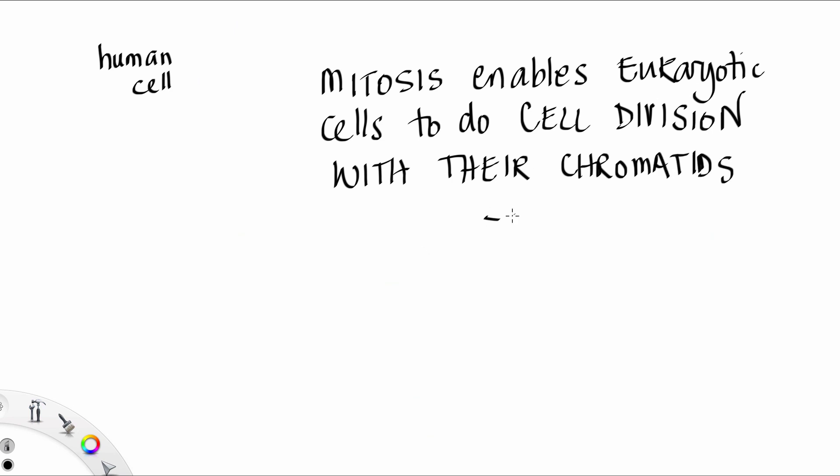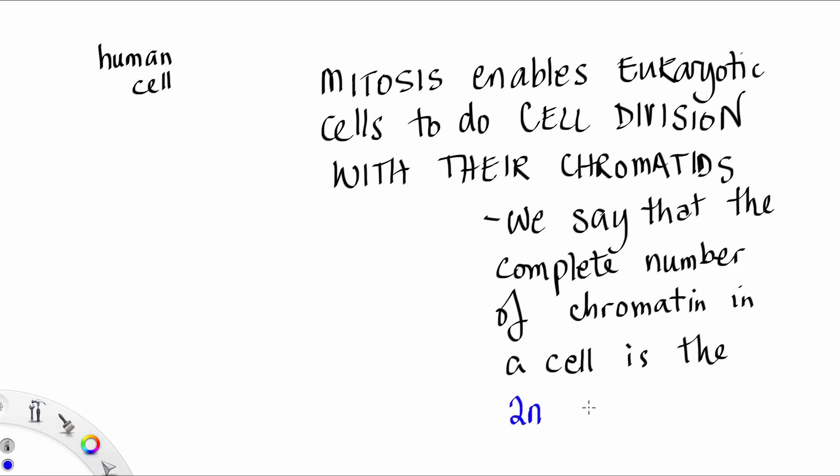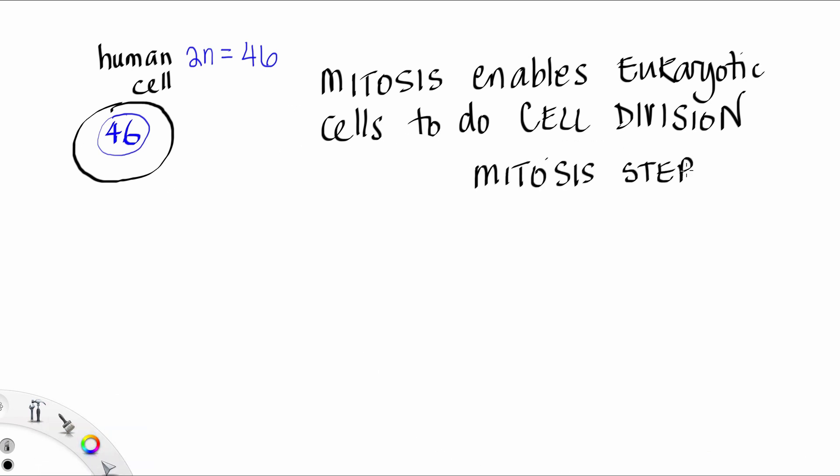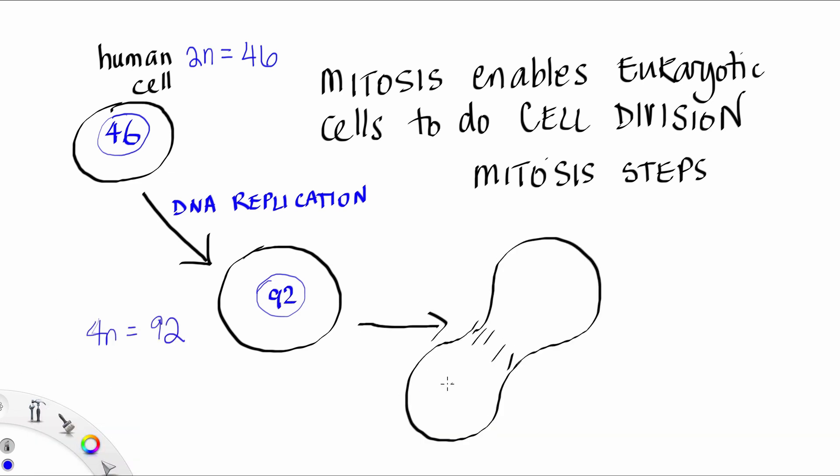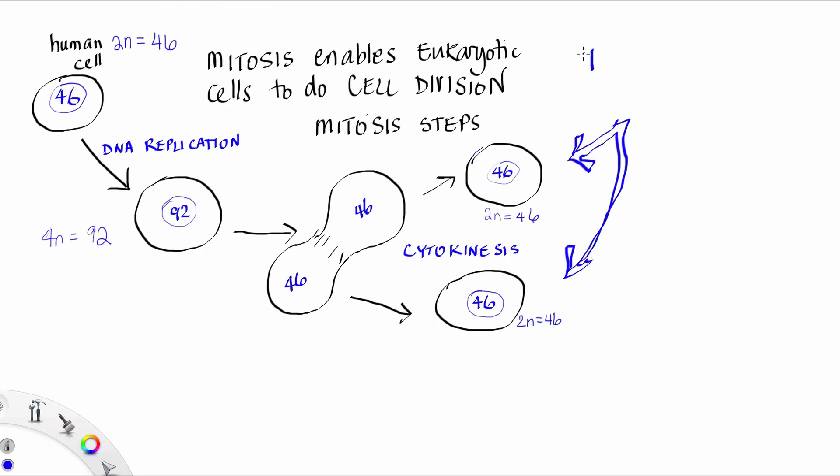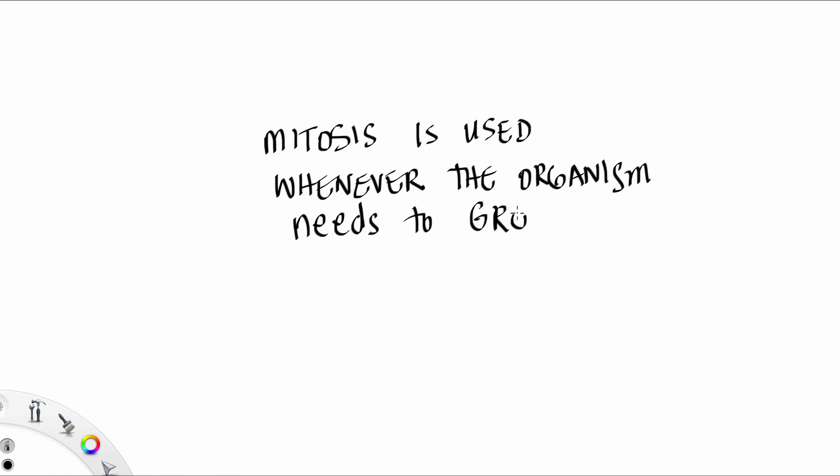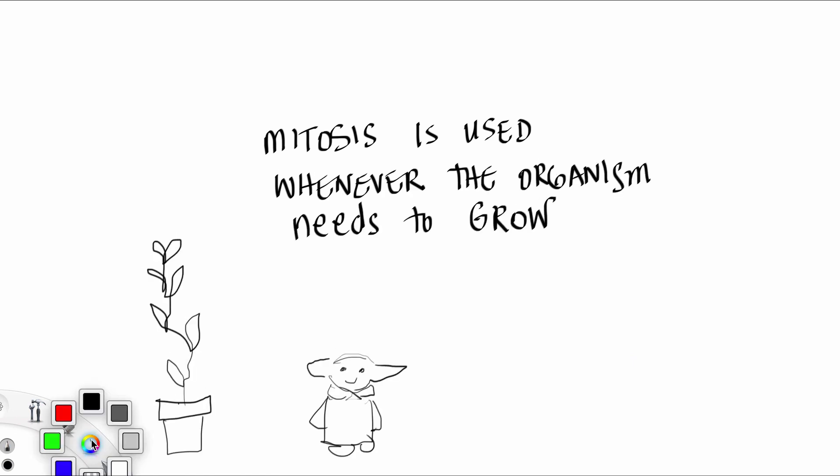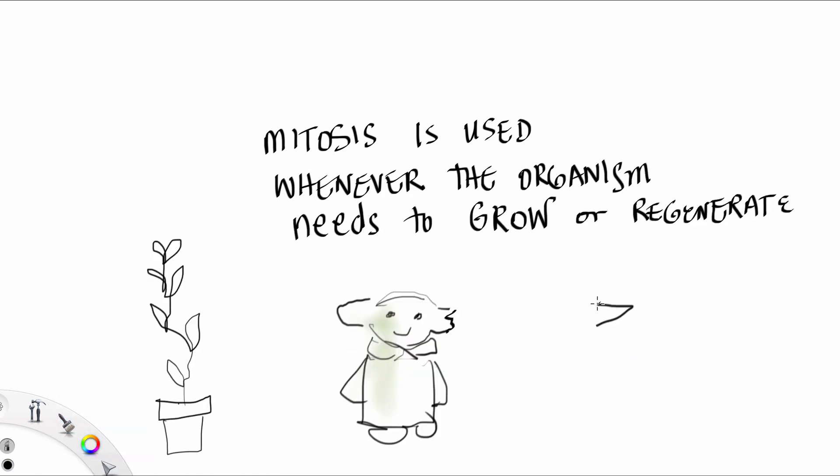Mitosis enables eukaryotic cells to do their cell division with their chromatids. We say that the complete number of chromatin in the cell is the 2n number or the diploid number. In a human cell, 2n is equal to 46. After mitosis is over, we get two identical daughter cells. Mitosis is used whenever the organism needs to grow or regenerate.